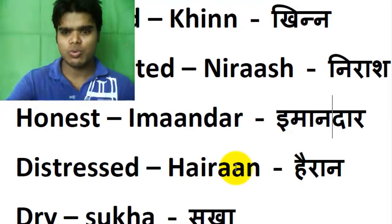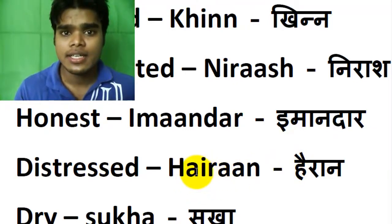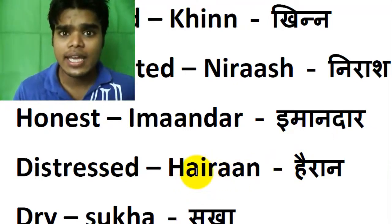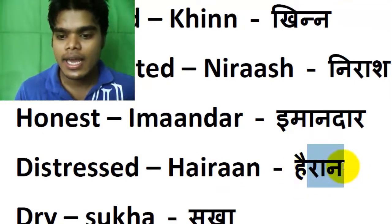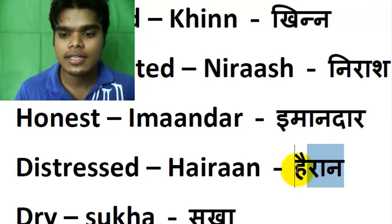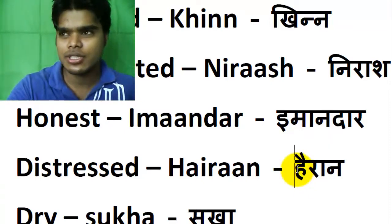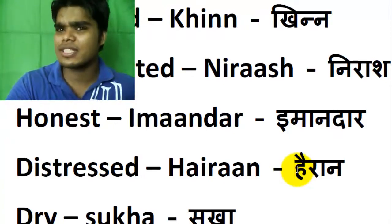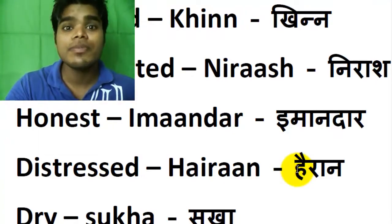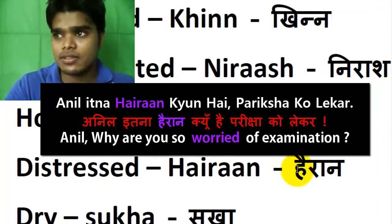Hairan is used when somebody is so much worried. We say Hairan, Hairan. For example: I am worrying so much about my examination, and my mom can say, 'Anil itna Hairan kiyo hai exam ko lekar?' — Anil, why are you so much worried about the exam?